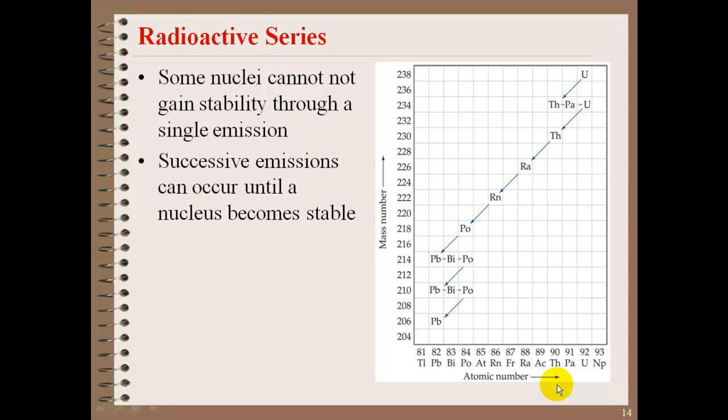Some nuclei cannot gain stability through a single emission. In order for some radioactive nuclei to become stable, they need to go through successive emissions. They'll go through an alpha, beta, another alpha, maybe a few more betas. This is called a radioactive series.